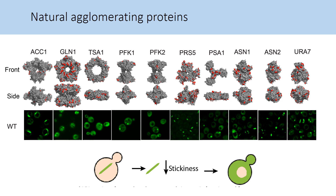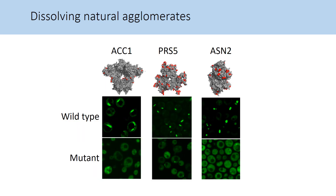This led me to target 10 yeast proteins known to agglomerate. You can see their structure in gray and their agglomeration phenotype underneath, as imaged by fluorescence microscopy. Using CRISPR, we introduced mutations at the positions highlighted in red to decrease the surface stickiness of those proteins and inhibit their agglomeration. In the cases of ACC1, PRS5, and ASN2, the mutations drastically inhibited agglomeration. With these mutants at hand, we can now investigate how loss of agglomeration impacts cellular functions and fitness. This is a work in progress, and I will very much value your comments on these results.